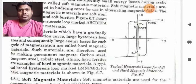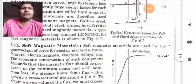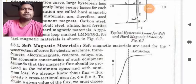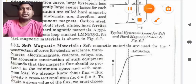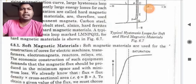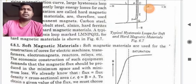Now let us discuss about soft magnetic materials. Soft magnetic materials are used for the construction of cores for electric machines, transformers, electromagnets, reactors, relays etc. The economic construction of such equipment demands that the magnetic flux should be produced in the minimum space and with minimum losses.